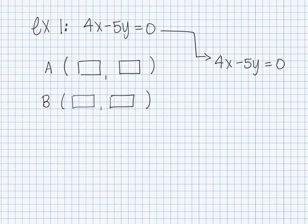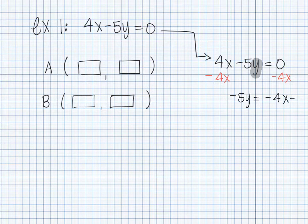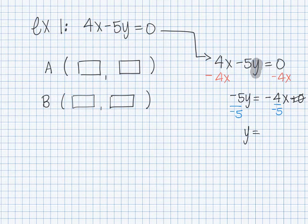equals 0, and the directions say to graph using two points. The first thing you want to do is solve for y. So I'm going to move the x's over — negative 4x plus zero is just negative 4x — and then divide through by the number in front. I'll have y equals negative 4 divided by